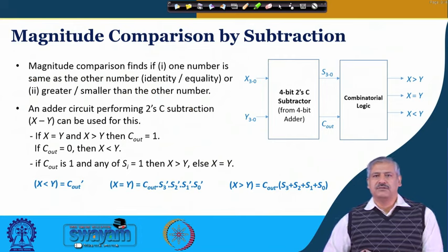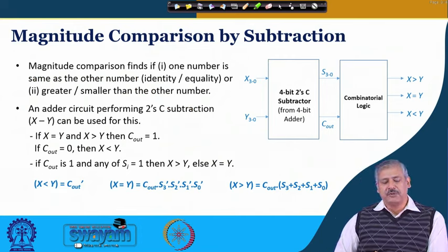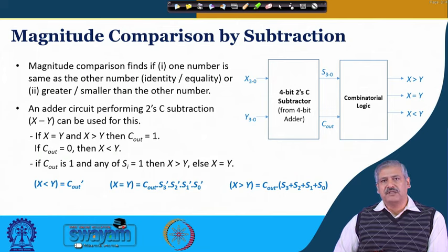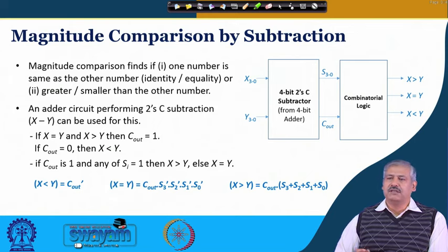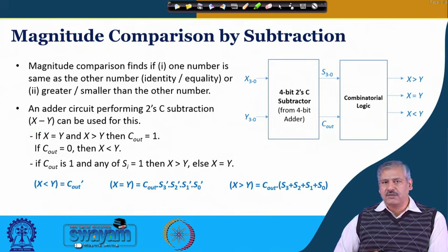In today's class we shall discuss magnitude comparison. The magnitude is to be compared between two numbers. When we talk about comparison, the first thing that occurs to our mind is: why not subtract one number from the other? Say one number is x and another is y. If x minus y is 0, the numbers are equal. If x minus y is positive, x is greater than y. If x minus y is negative, then x is less than y. We can get magnitude comparison done by a subtraction process.